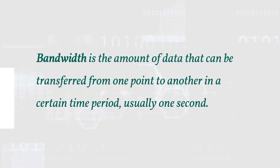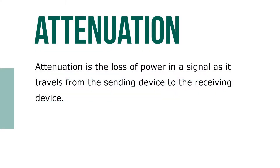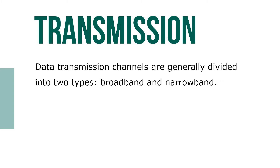Bandwidth is the amount of data that can be transferred from one point to another in a certain time period, usually one second. Attenuation is the loss of power in a signal as it travels from the sending device to a receiving device. Data transmission channels are generally divided into two types: broadband and narrowband.